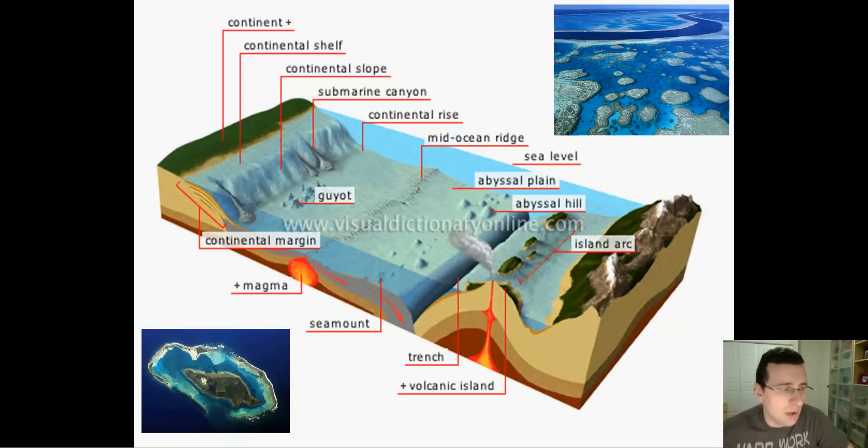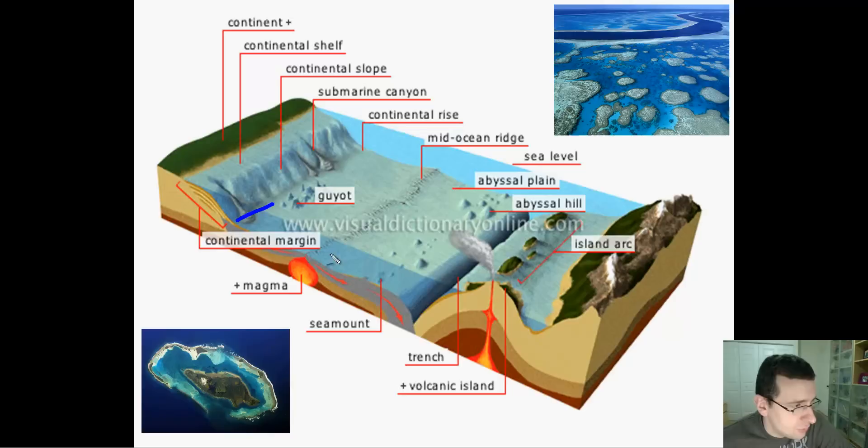The most obvious thing you see is that the deep ocean basins are mostly flat ground, like a plain. That's why we call those regions abyssal plains. In between each continent, you have a vast stretch of pretty much flat ground that constitutes the abyssal plain.